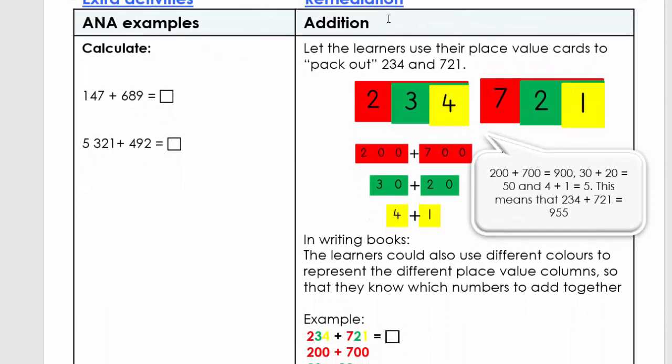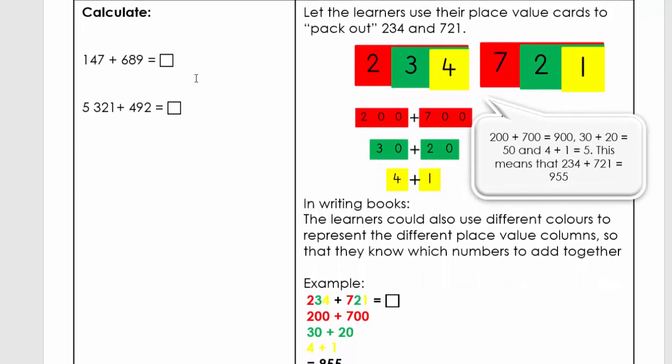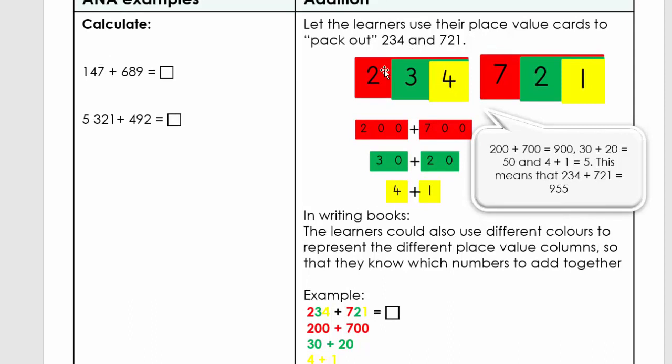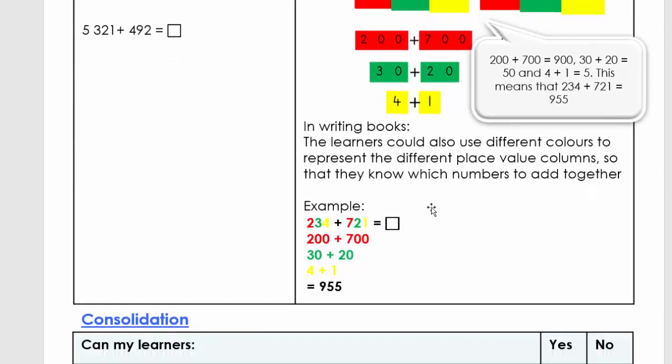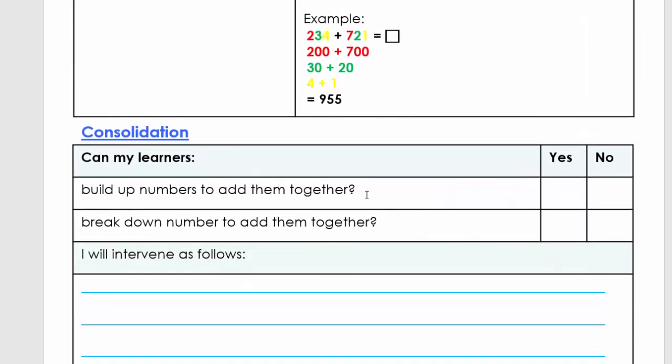We've got extra activities and remediation. Extra activities come from old exam papers, ANA examples, and Olympiad tests. The remediation section provides extra activities for learners that struggle. If you need to help them, pause at this stage, use your place value cards, and help them add. Lastly, consolidation is where you ask yourself questions: Can my learners build up numbers to add them together? Answer yes or no. If all answers are yes, carry on to the next lesson. If you have some no's, revisit these sections or call us at SA Teacher for support.